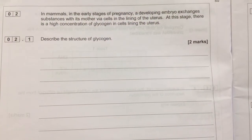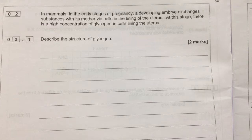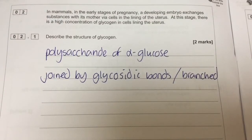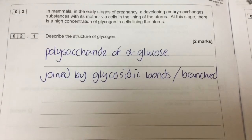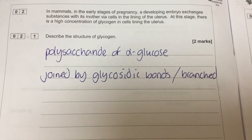This question is from Paper 1 of the A Level 2017. The first bit of the question gives us the context, which we can't forget as we go through and answer more questions. It says: in mammals, in the early stages of pregnancy, a developing embryo exchanges substances with its mother via cells in the lining of the uterus. At this stage, there is a high concentration of glycogen in cells lining the uterus. Part one asks: describe the structure of glycogen.